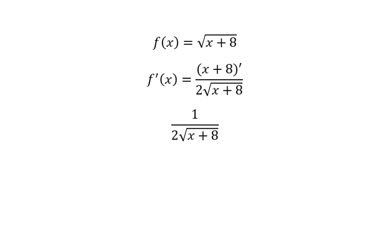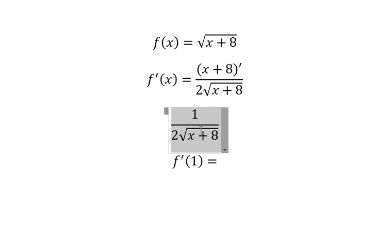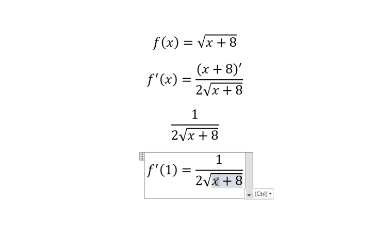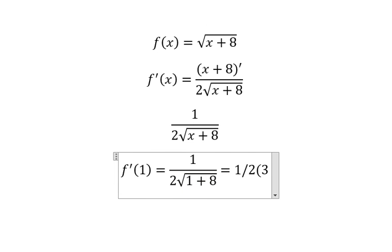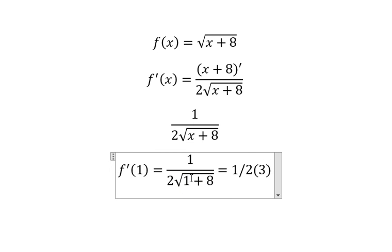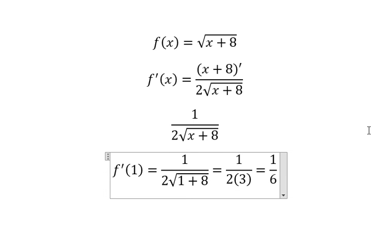Now we need to find the value at s equal to 1. So we put 1 in here, and we will have 1 over 2 multiplied by 3, because the square root of (1 plus 8) gives 9, and the square root of 9 is 3. So we have 1 over 6. This is the end. Thank you for watching.